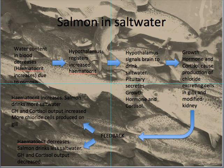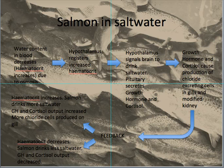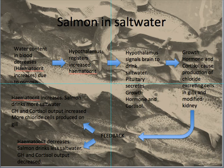When the hematocrit level — which is all the blood cells in the blood — when that level increases because the water content is going down, the hypothalamus registers that increase. That's your detection. It then sends a signal to the brain to start drinking salt water. And as part of doing that, the pituitary is going to secrete growth hormones and cortisol. The growth hormones and cortisol produce lots of chloride cells to help the gills excrete all of that excess chloride that's going to come in with the fluid. And it's going to modify the kidney so that as the salmon drinks lots of salt water, the kidney is modified to ensure that lots of water gets reabsorbed, but the chloride is excreted out through the gills.